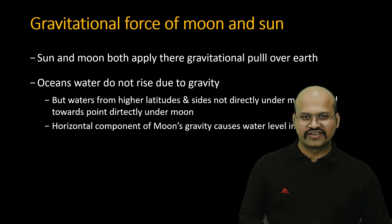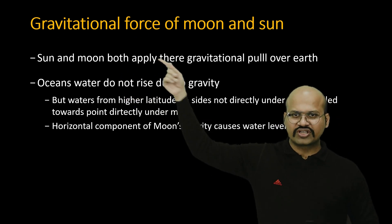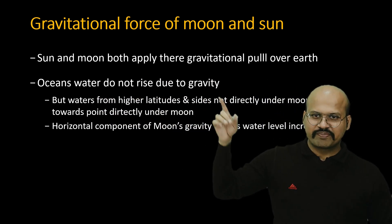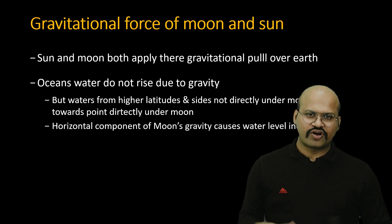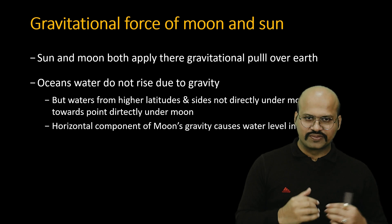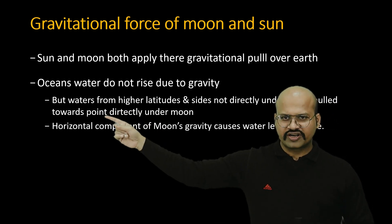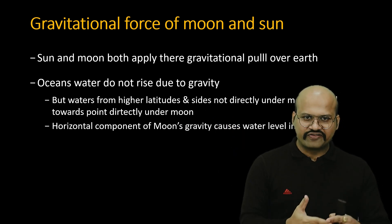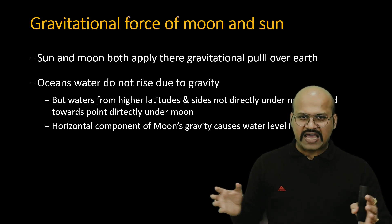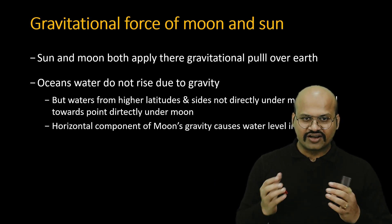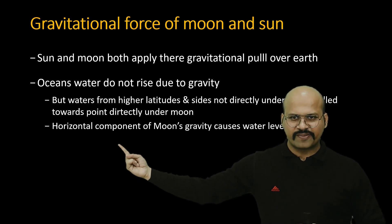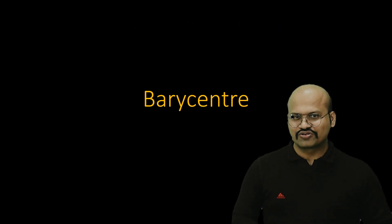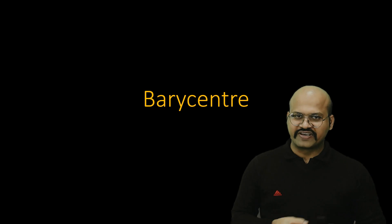Here is a summary: the sun and moon both apply gravitational pull on earth, but ocean waters do not directly rise up due to gravity. Instead, water from all directions is brought and piled up at the point facing the moon — from higher latitudes as well as from the sides. This piling up causes the water level to increase. It is the horizontal component of the moon's gravity that causes the rise in water level.